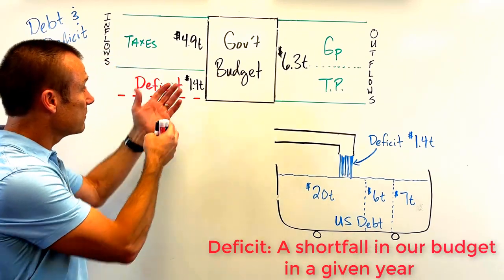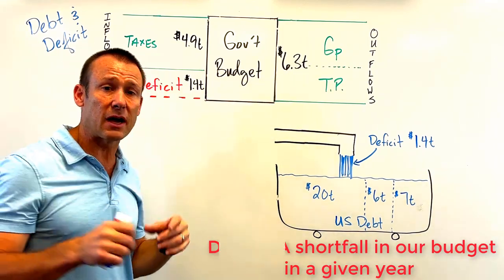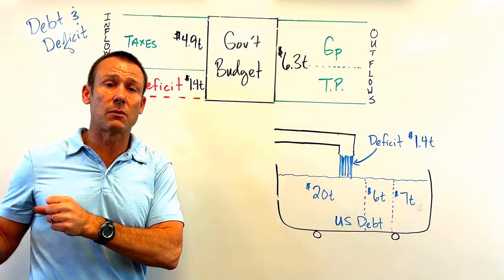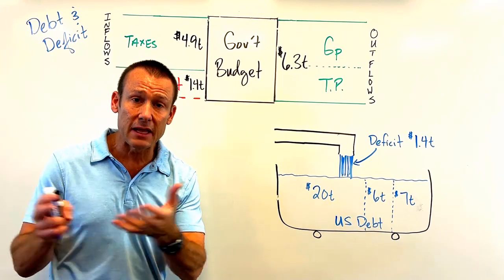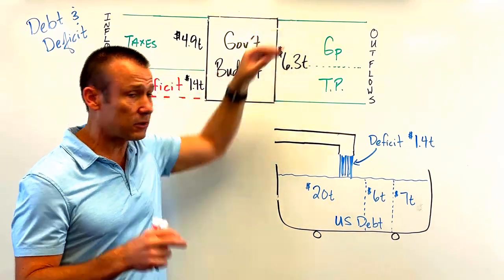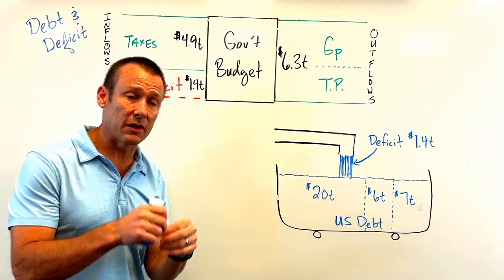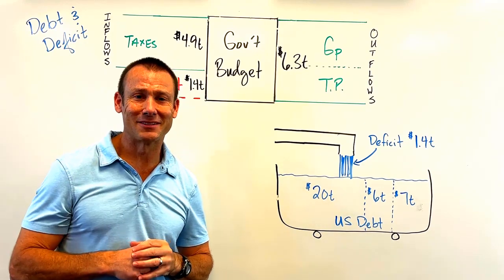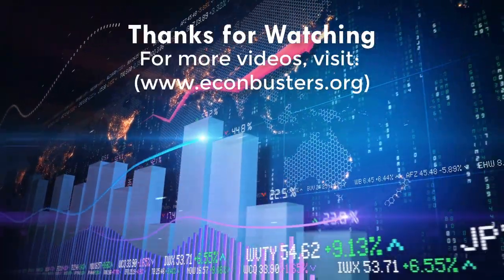The deficit is the amount our budget has a shortfall in a given year. In 2022, we had $4.9 trillion in taxes and $6.3 trillion in expenditures — a deficit of $1.4 trillion. We had to go to financial markets and borrow money to make good on our legislated obligations, passed by Congress and signed by the president. The Treasury Department borrows that money, but of course that adds to our debt.